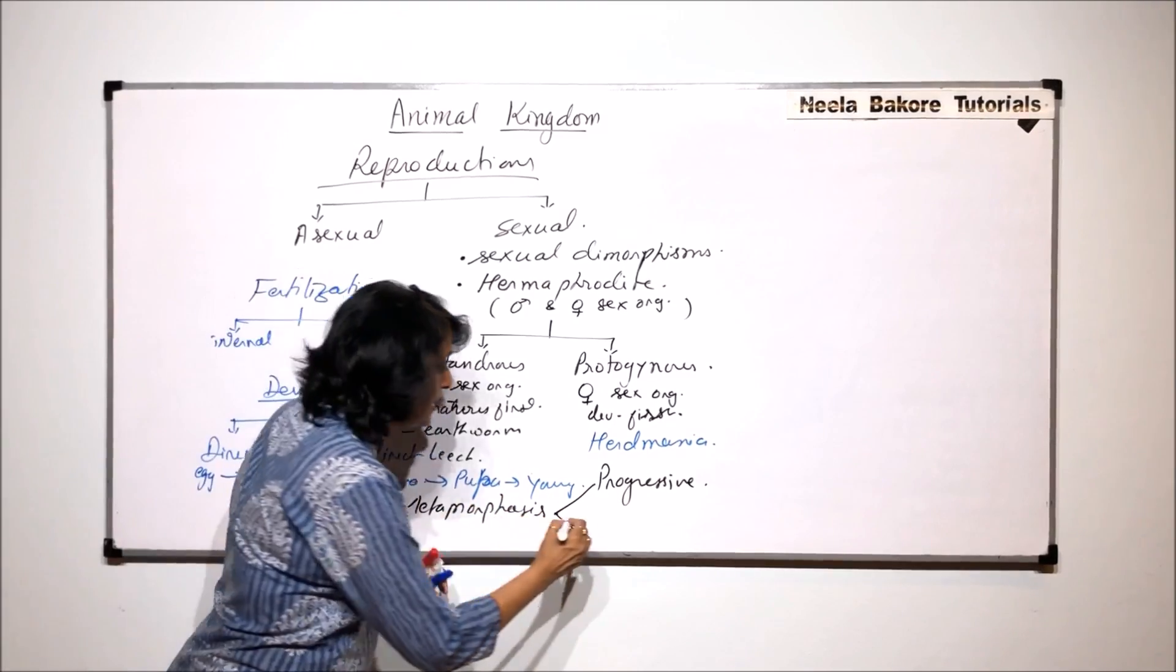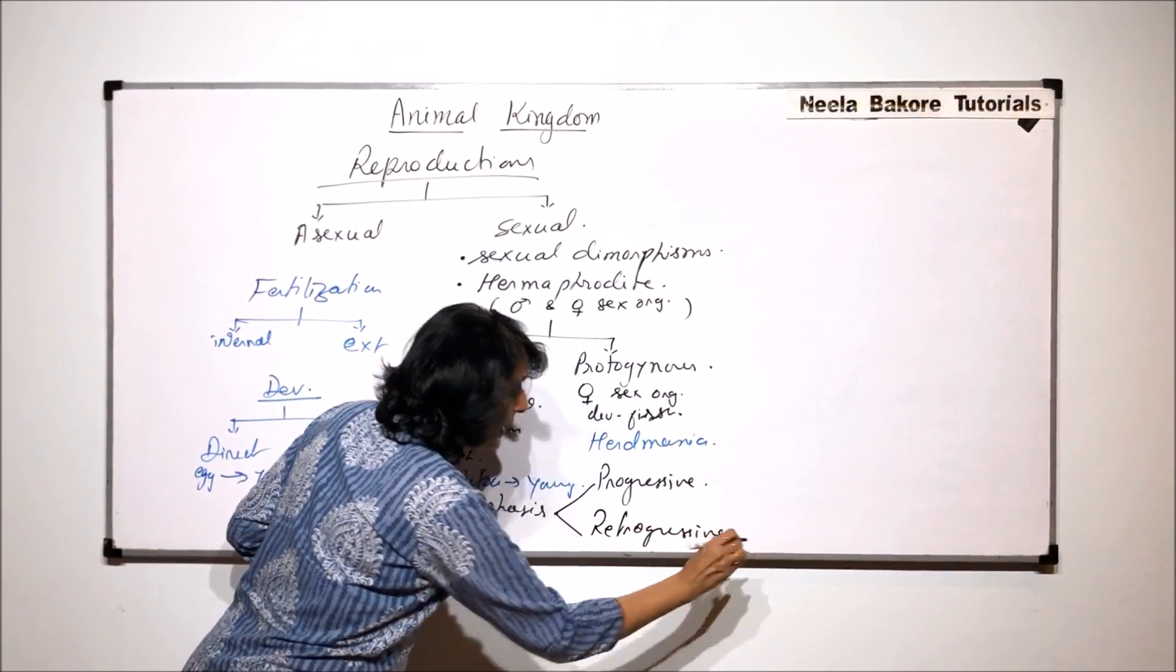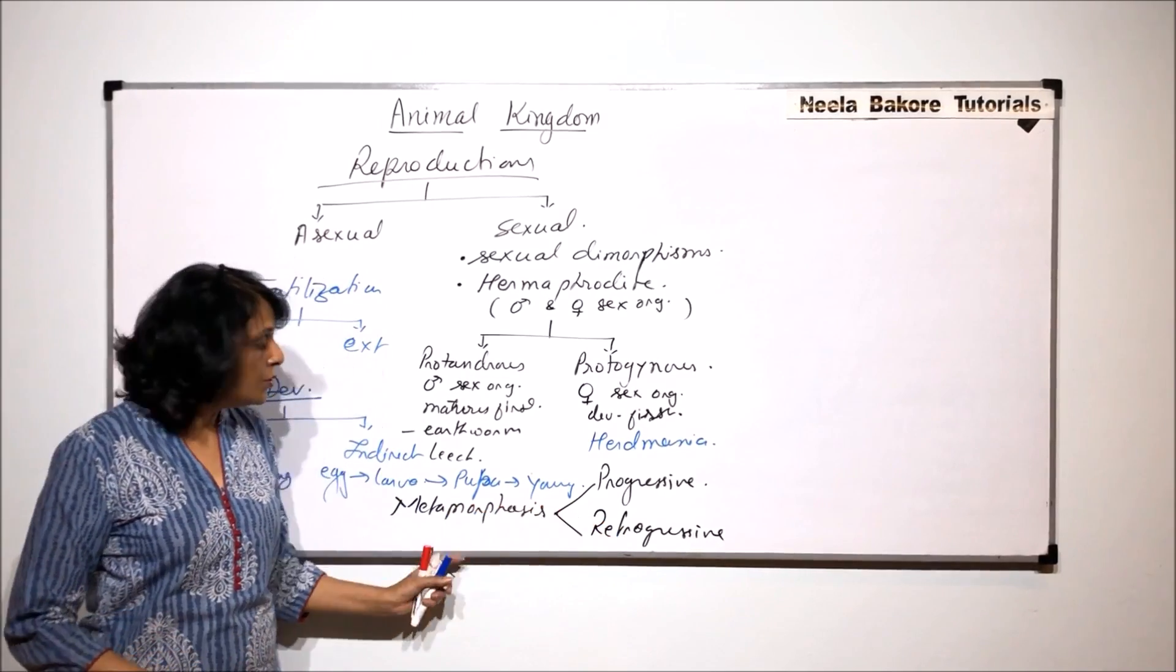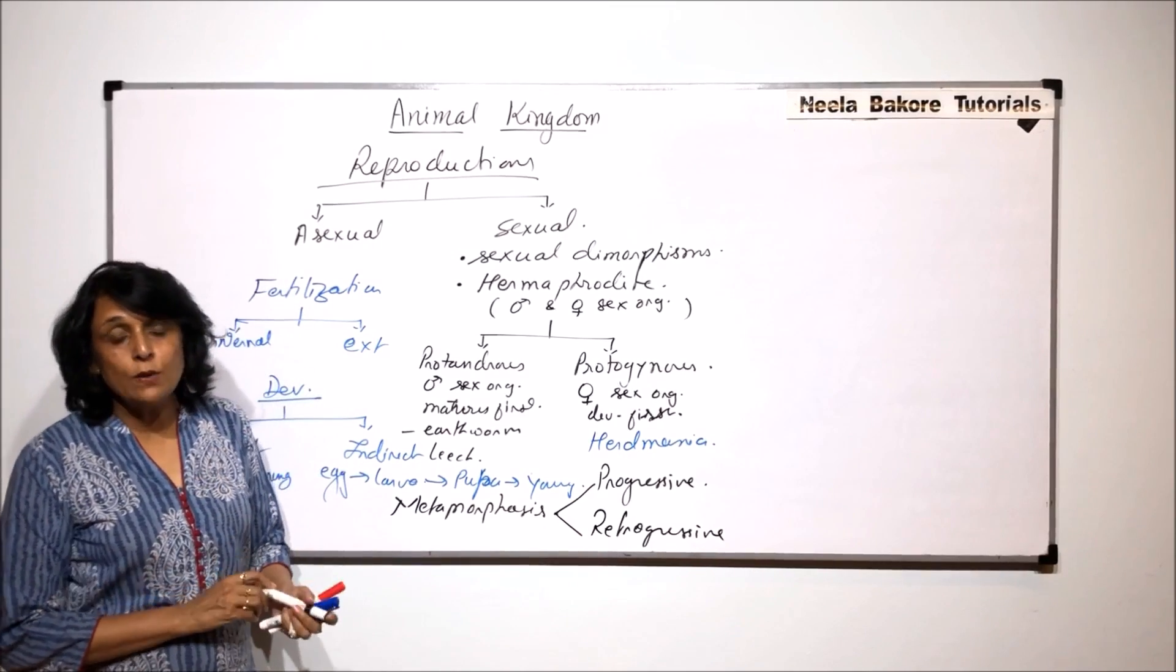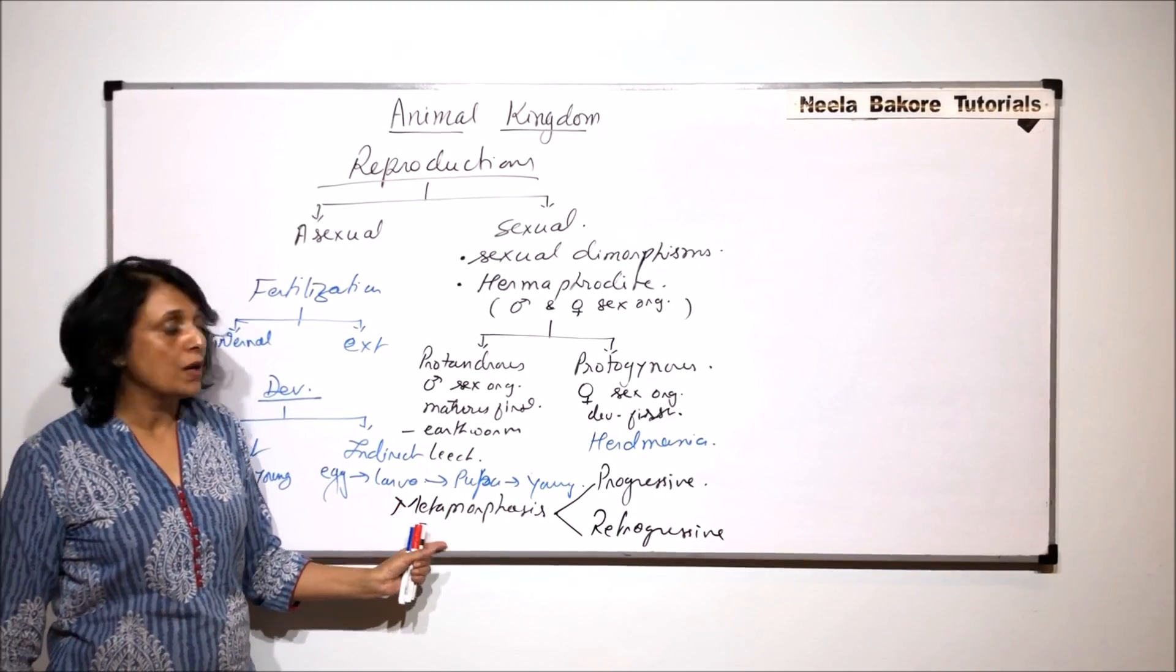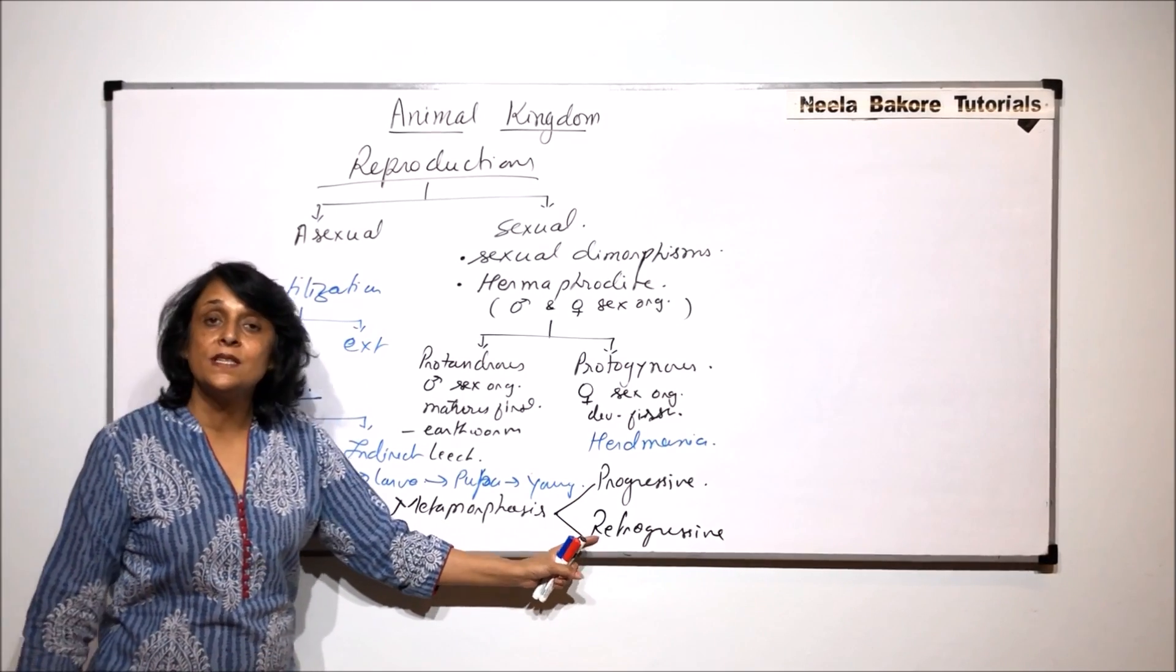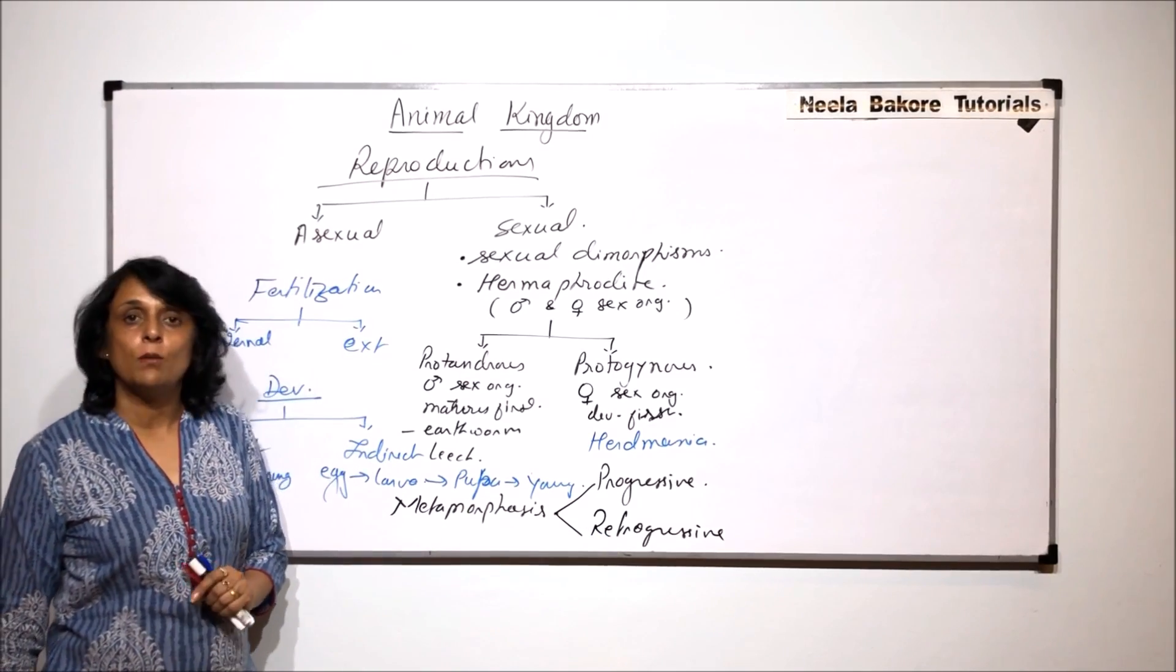Whereas in other case it is called retrogressive metamorphosis. In retrogressive metamorphosis, the larva has more advanced structures which get lost as it changes into the young one. In case of tadpole, the tail is present which is a functional structure. But when this tadpole which is a larval stage of frog, larva changes into pupa, the tail gets reabsorbed. So a developed fully formed structure is getting reabsorbed. Same thing happens in case of herd mania also. So that process is known as retrogressive metamorphosis.